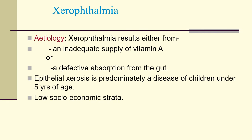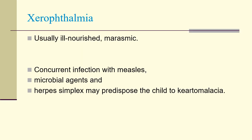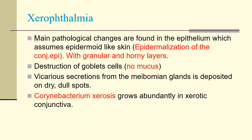The etiology of xerophthalmia results either from an inadequate supply of vitamin A or defective absorption from the gut. Epithelial xerosis is predominantly a disease of children under 5 years of age, seen in low socioeconomic strata. Usually the child is ill-nourished or marasmic — it is protein-energy malnutrition. Concurrent infection with measles, microbiome agents, and herpes simplex may predispose the child to keratomalacia.